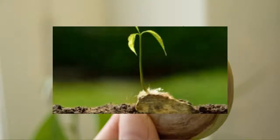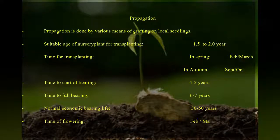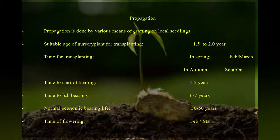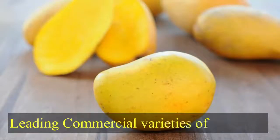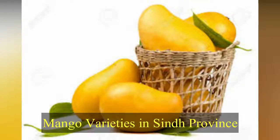Propagation is done by various means of grafting on local seedlings. Suitable age of nursery plant for transplanting: 1.5 to 2.0 years. Time for transplanting: spring (February–March) or autumn (September–October). Time to start of bearing: 4 to 5 years. Time to full bearing: 6 to 7 years. Normal economic bearing life: 30 to 50 years.